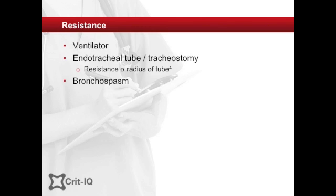Bronchospasm and air trapping are common in ICU patients. Bronchodilators, steroids and appropriate ventilator settings may be required. In some patients with airflow limitations, such as asthma and emphysema, intrinsic PEEP development increases the work of breathing required to adequately inspire. Application of a small amount of extrinsic PEEP and implementation of strategies to reduce intrinsic PEEP development, such as increasing inspiratory flow rate and reducing tidal volumes and respiratory rate, are important. For more information on this, see our vodcast on patient ventilator dyssynchrony.